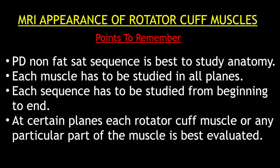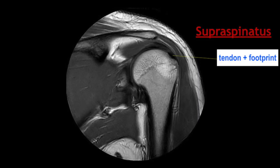Now, coming to the MRI appearance of the rotator cuff muscles. Before we go to each muscle, we have to remember a few things. Proton density non-fat sequence is the best sequence to study anatomy of the muscles and tendons. Each of these muscles has to be studied in all planes. Each sequence has to be studied right from the beginning to the end and not only in the area where the pathology is. At certain planes, each rotator cuff muscle or particular part is best evaluated, so we have to note in which plane we see which part of which rotator cuff muscle.